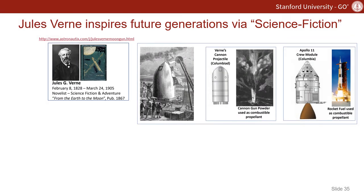Jules Verne's book From the Earth to the Moon starts with a capsule, the Columbia, or a projectile, that he'll launch using gunpowder as a combustible propellant. And we see the capsule here.